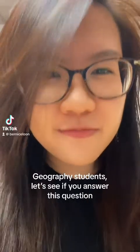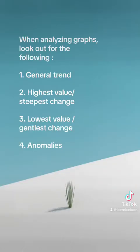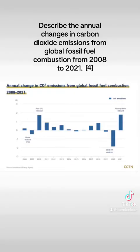Geography students, let's see if you can answer this question. Quick recap. Now prove that you can apply what you've learned from the previous video. Describe the annual changes in carbon dioxide emissions from global fossil fuel combustion from 2008 to 2021.